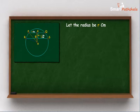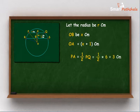Let the radius be r cm and OB be x cm. So OA is equal to x plus 1 cm. Since perpendicular from the center bisects the chord, therefore PA is equal to half of PQ, i.e. 3 cm, and RB is 4 cm.